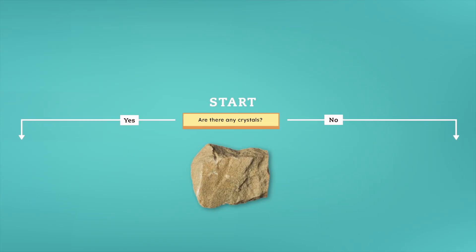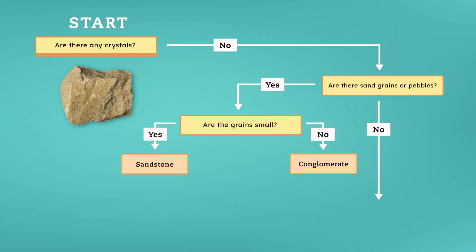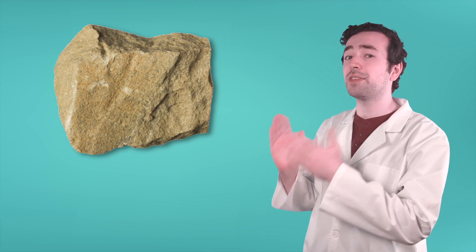So, we start here: do we see any crystals? I'm looking for shiny surfaces, but I don't see any, so I'm going to say no. If we follow the no arrow, we'll get to our next question: do we see sand grains or pebbles? This rock does look a little grainy — see how it's not totally smooth? Are the grains small? Oh yeah, definitely small. That means this rock is sandstone! By using the dichotomous key, we have identified that this rock is sandstone. Awesome job! Let's try another.